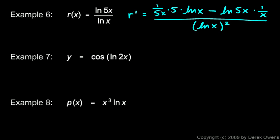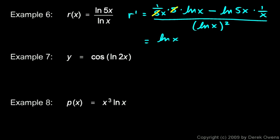The 5's here cancel out. The x in the denominator of the first term and the x from 1 over x in the second term can be consolidated, giving a simplified form: the natural log of x minus the natural log of 5x, all over x times [ln(x)]².